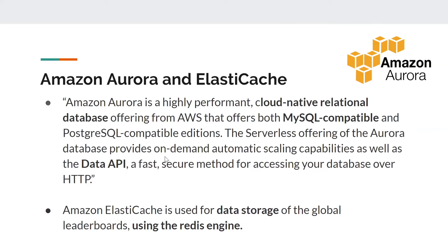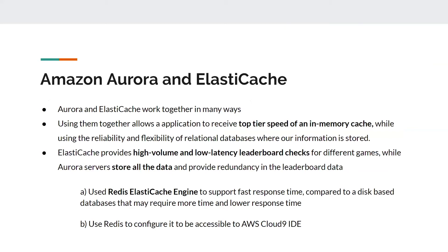For example, with a disk database, when the disk space is not full it is faster, but as you start filling the disk space, retrieval starts to get slower. We use ElastiCache with the Redis engine, which is a design implemented into ElastiCache that modifies data to always be read from the main memory of the computer. It also supports abstract data types. With Aurora and ElastiCache working together, we use them to receive top-tier speed of an in-memory cache and the flexibility of Aurora within our relational databases where data is stored.